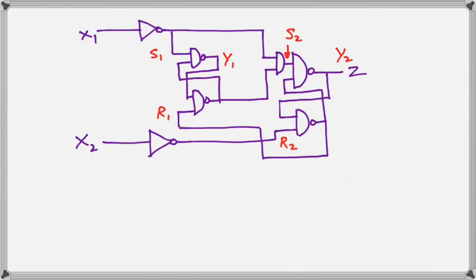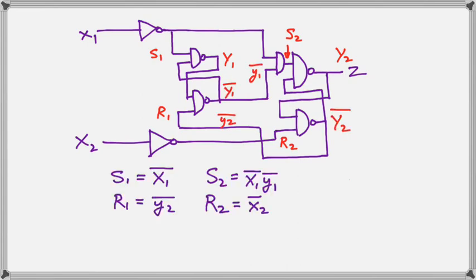Then we label the outputs Y1 and Y2. The next thing we do is find the equations for S1, R1, S2, and R2 based on the gates. Simply looking at the gates will show you that those equations for the RS latches are correct.